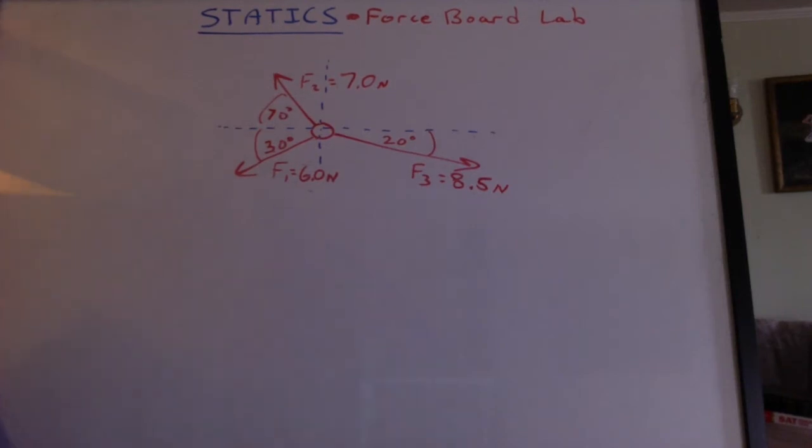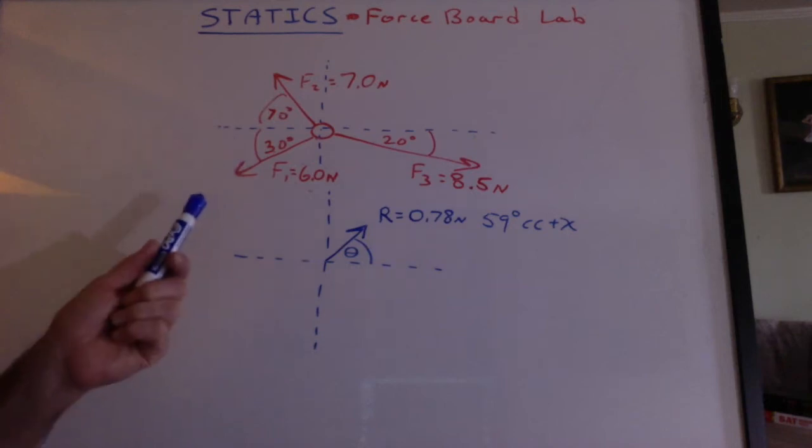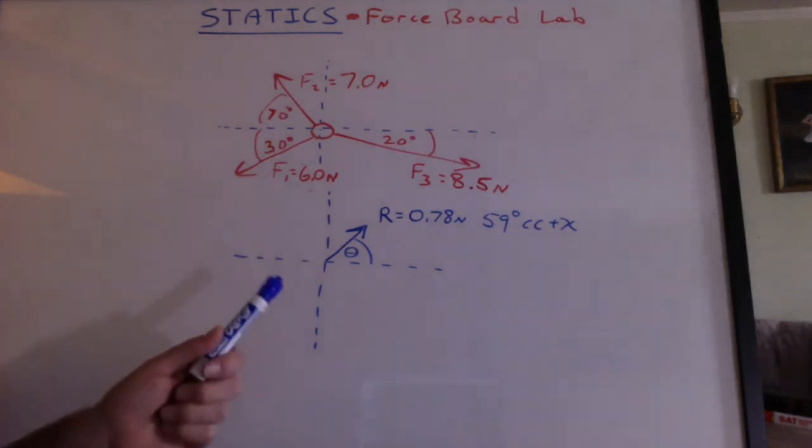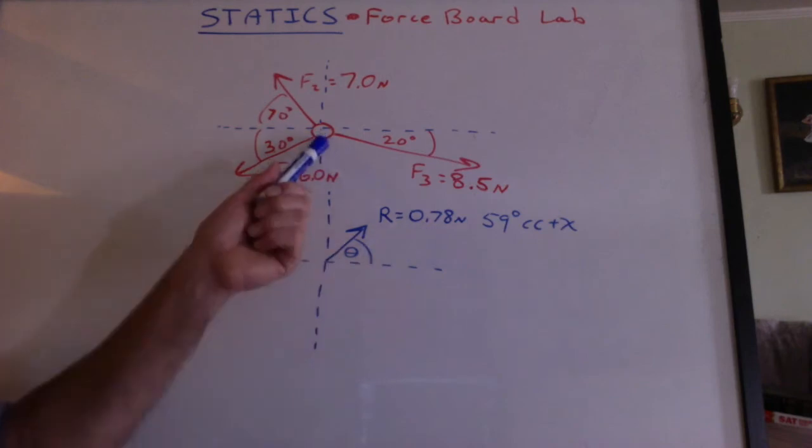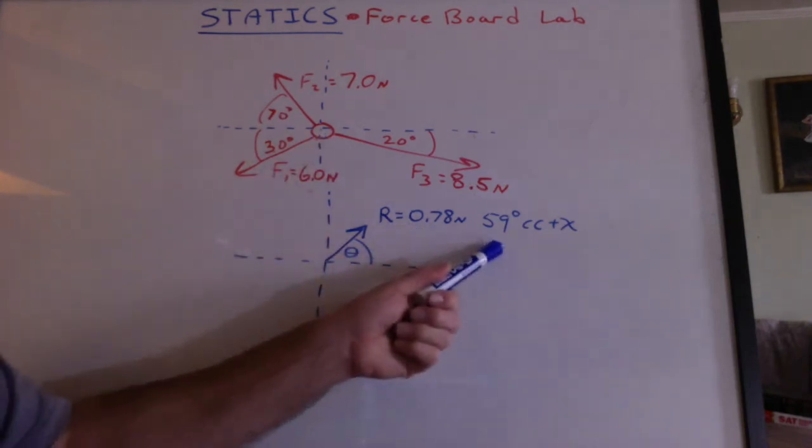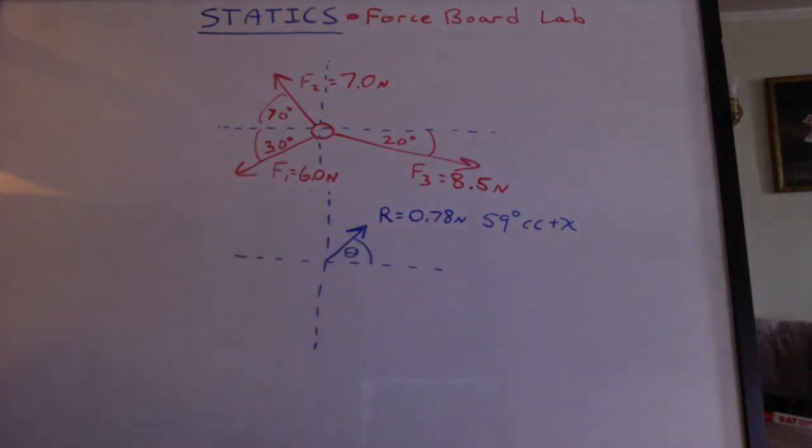We had to find the resultant of those by breaking each vector up into its x and y components, adding the x's, adding the y's, and then doing the Pythagorean theorem and inverse tangent. And the resultant turns out to be, in this example, 0.78 newtons at 59 degrees counterclockwise from a positive x.